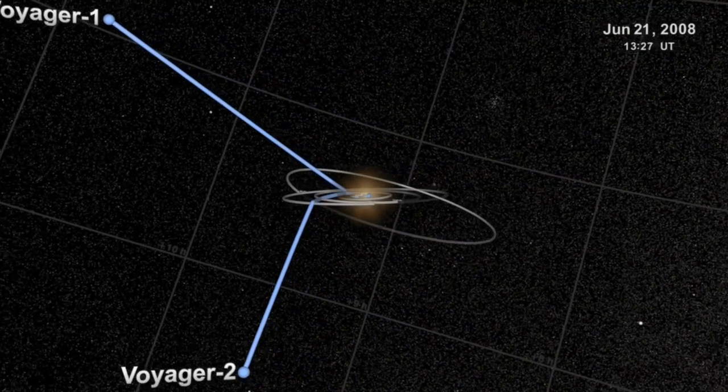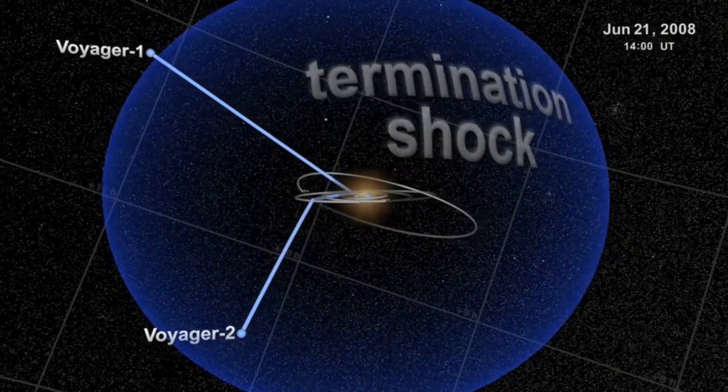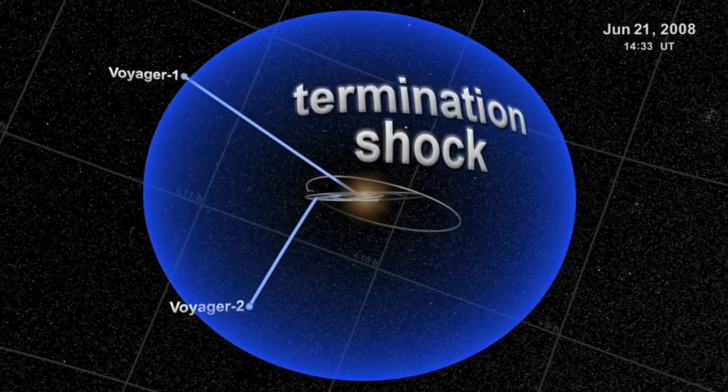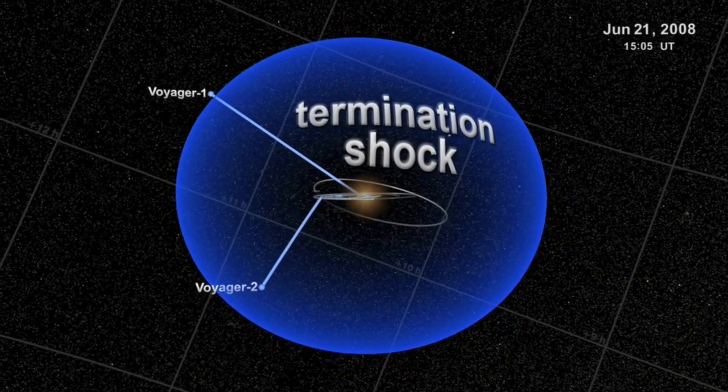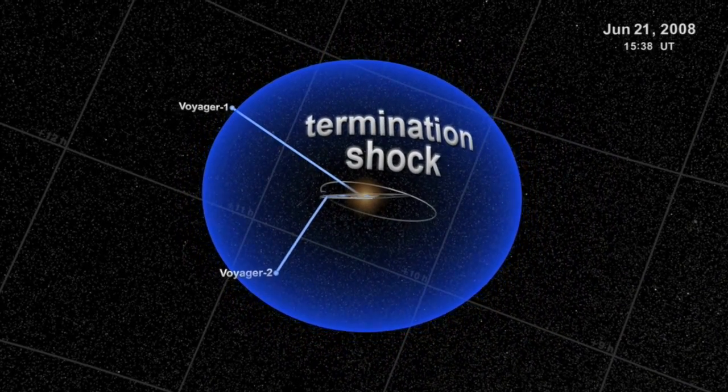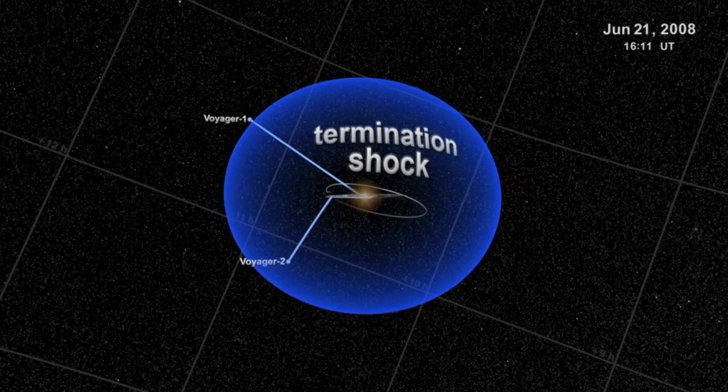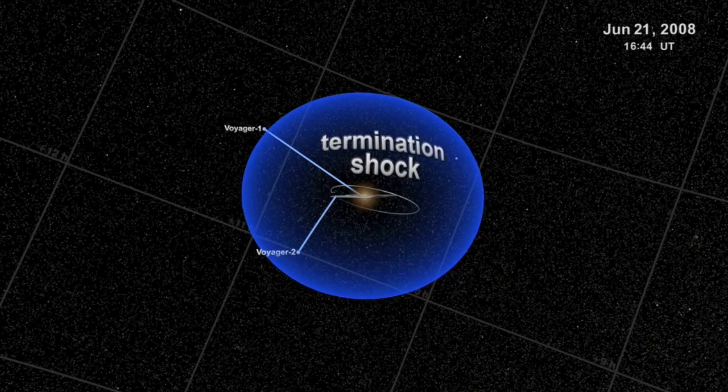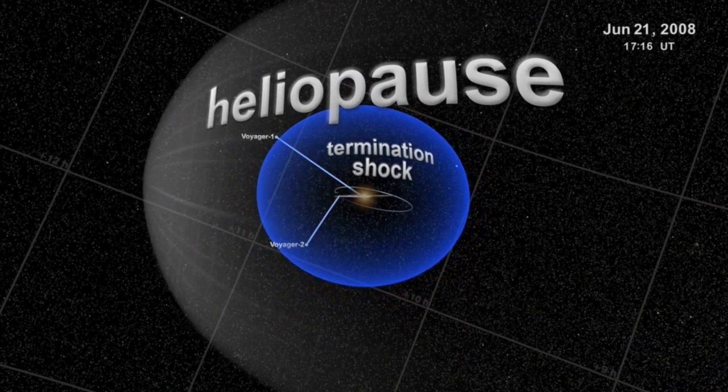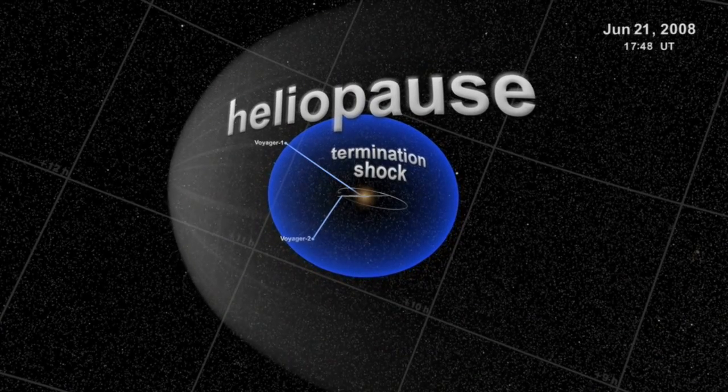They are also the first human objects to encounter the sun's termination shock, the area where the solar wind slows down enough to be affected by the flow of interstellar particles. In a couple of decades, one of the Voyager crafts should pass the heliopause, the zone where the sun's influence meets the interstellar medium.